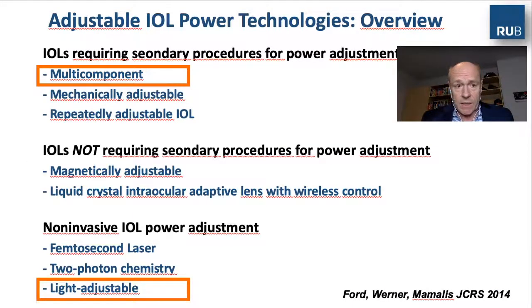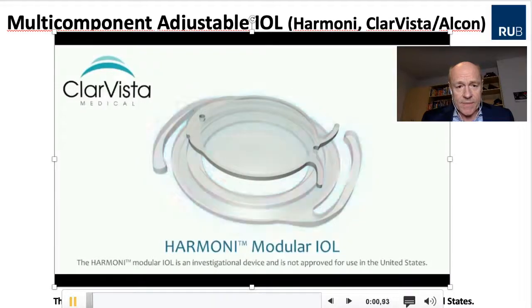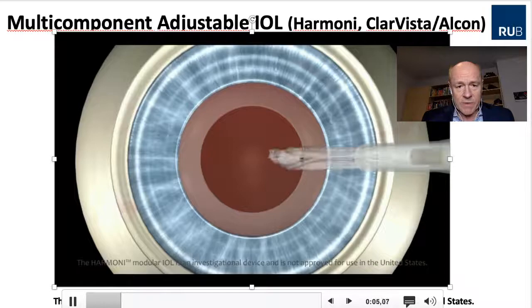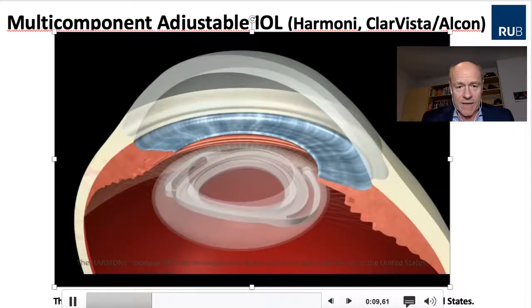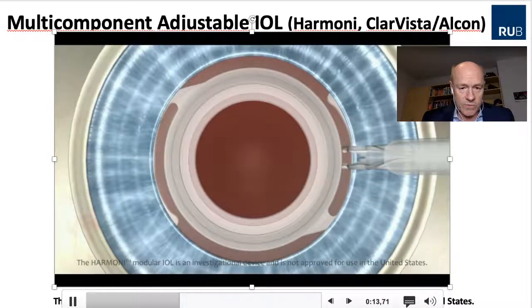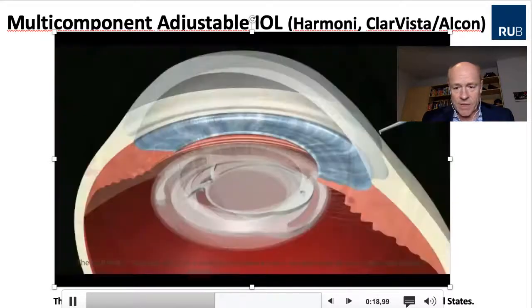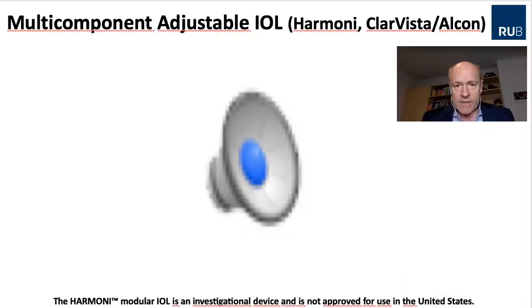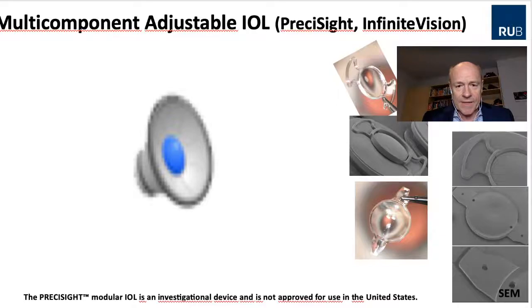Let's first start talking about multi-component IOLs. One of them is the so-called Harmony lens that comes with a basic lens, which is implanted into the bag, and then the optic is implanted into this basic lens — that could be a toric lens, multifocal lens, or even monofocal lens. So it can accommodate and can easily be exchanged.